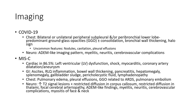Imaging findings in COVID-19: on chest imaging, bilateral or unilateral peripheral, subpleural, and/or peripheral predominant ground-glass opacities, plus or minus consolidation. Neurological imaging patterns include ADEM-like imaging, myelitis, neuritis, cerebral vascular complications, and meningitis.